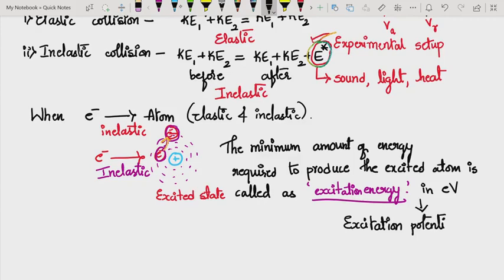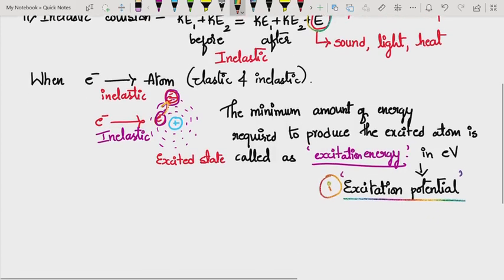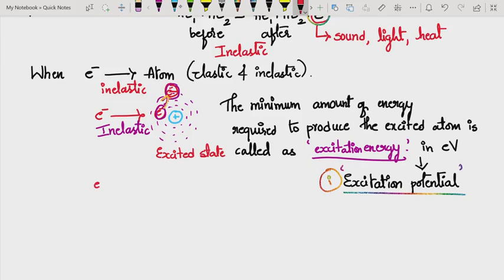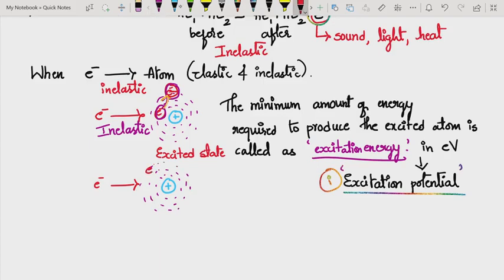If we write this excitation energy in terms of electron volts, we call it excitation potential. So the first critical potential we study here is excitation potential. Similarly, when a swiftly moving electron makes a collision with an atom having orbitals around the nucleus...